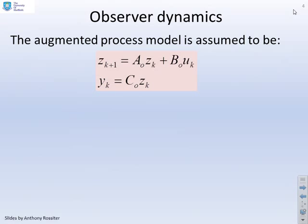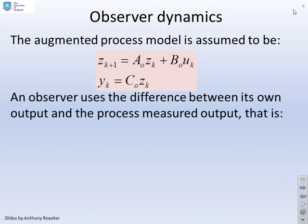The augmented process model then is taken to be something like this, so Z equals A0Z plus B0U, Y equals C0Z.